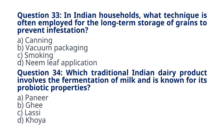Question 34. Which traditional Indian dairy product involves the fermentation of milk and is known for its probiotic properties? A. Paneer. B. Ghee. C. Lassi. D. Khoya. The correct answer to question 34 is option C. Lassi. Explanation. Lassi is a traditional Indian beverage made by fermenting yogurt, providing probiotic benefits for digestive health.